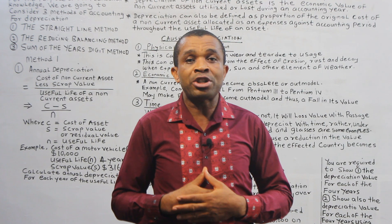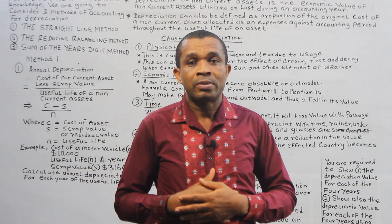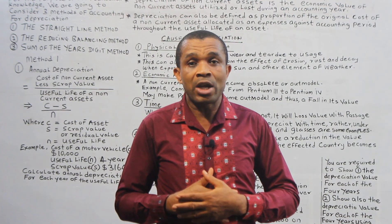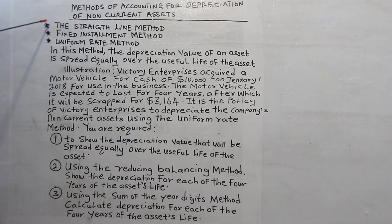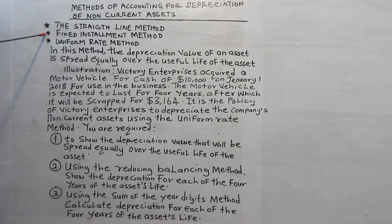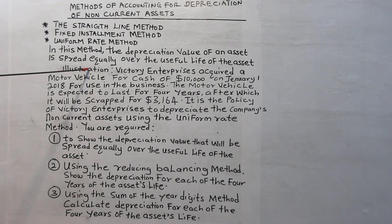In the straight line method, the depreciation value of an asset is spread equally over the useful life of the asset. Another name for this method is the fixed installment method, or the uniform rate method. The depreciation value of an asset is spread equally over the useful life of the asset.